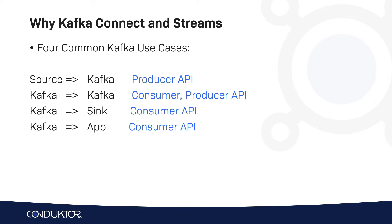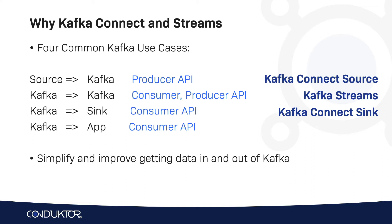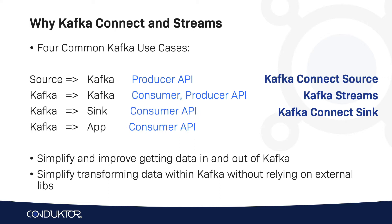The first use case is addressed by using Kafka Connect Source, which is a way for us to get data from external sources into Kafka. Kafka Streams is going to address the second use case with a much nicer API than using consumers and producers. Kafka Connect Sink is going to give us a way to get data from Kafka and insert it into common places. The idea is to simplify and improve getting data in and out of Kafka, and Kafka Streams will help us transform data in Kafka without relying on very heavy libraries.